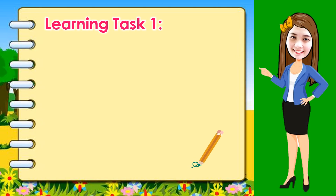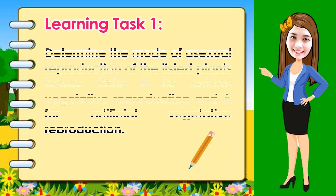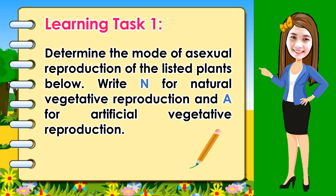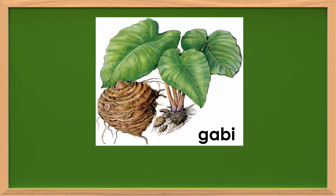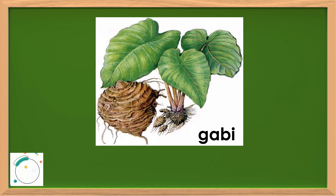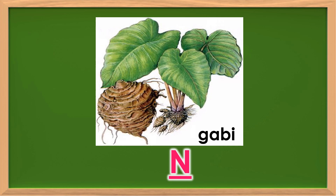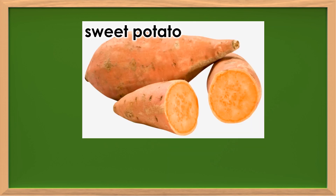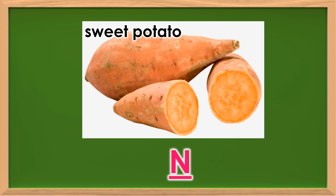Learning Task 1: Determine the mode of asexual reproduction of the listed plants. Write N for natural vegetative reproduction and A for artificial vegetative reproduction. Gabi — the answer is N. Sweet potato — the answer is N.